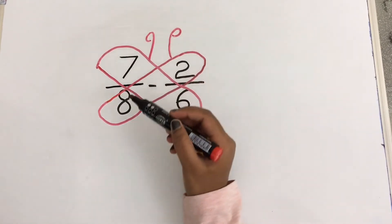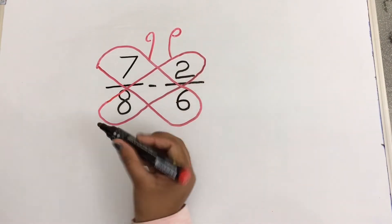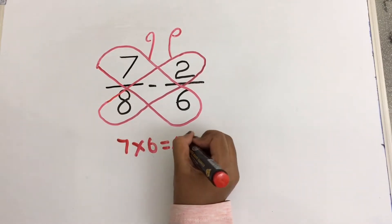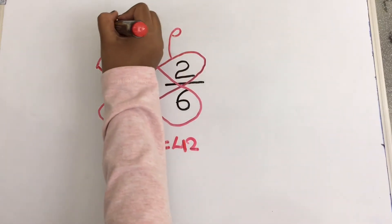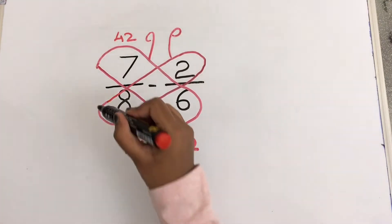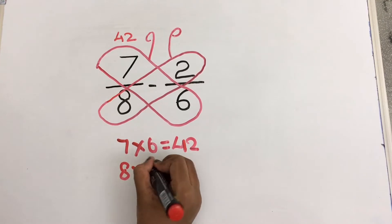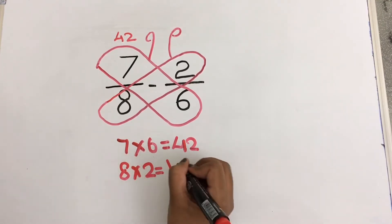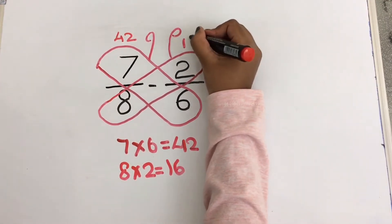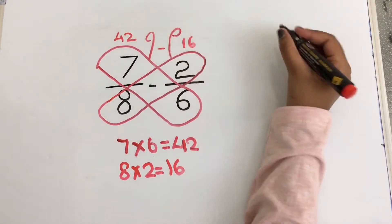Now we have to multiply 7 into 6. 7 into 6 equals to 42, so I am going to write it over here. Then multiply 8 into 2. 8 into 2 equals to 16, and I am going to write it over here. Now we have to subtract 42 minus 16.